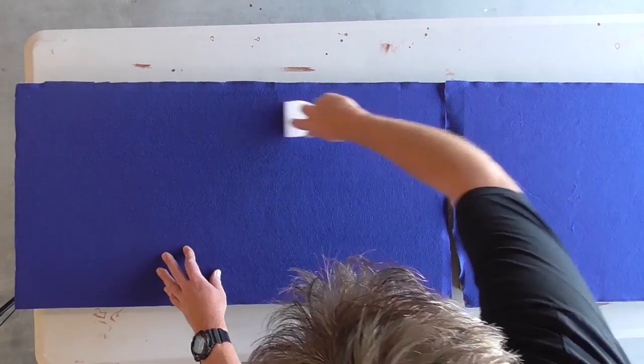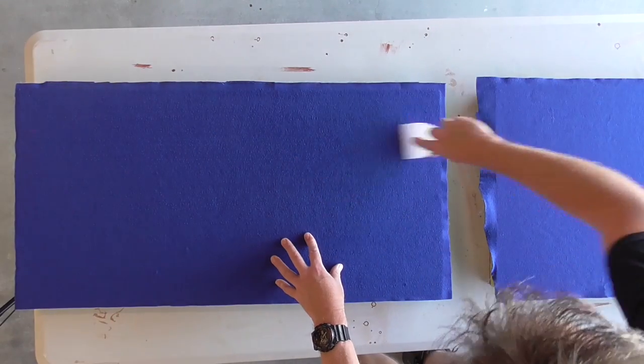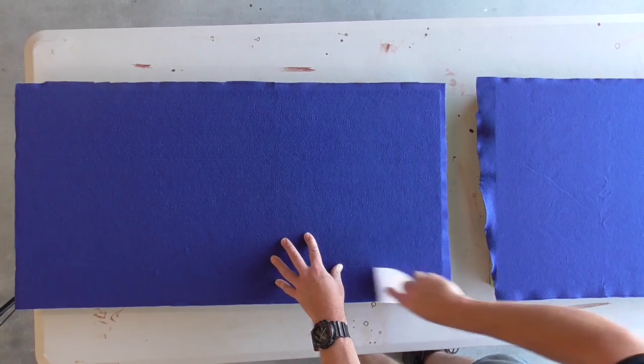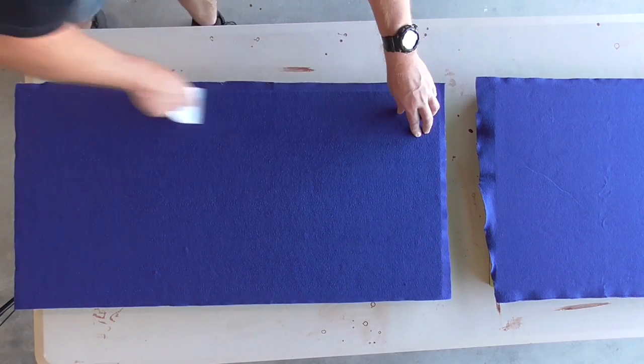This is my plastic paint scraper. As you can see, I'm just smoothing out the edges, applying a little bit of pressure but not too much because I don't want to damage it, and just making sure I get onto the edges.